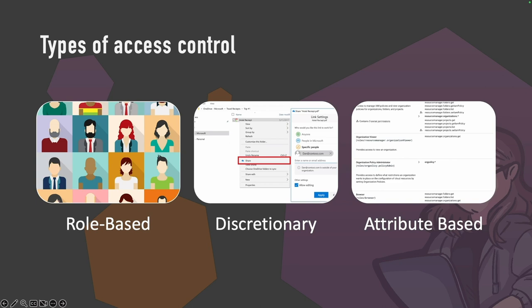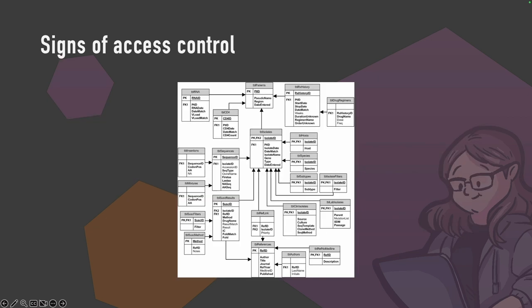With attribute-based access control, as you can imagine, it gets complicated really quickly. The key security question is: what should this user be allowed to do? And the only way you can test that is by seeing what your user can do and using your brain to ask — should they have permission to do that? You find a lot of access control signs on APIs, especially on data with foreign keys and really complex data structures.